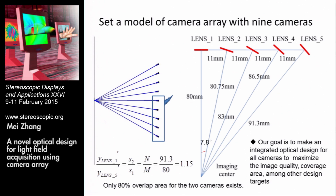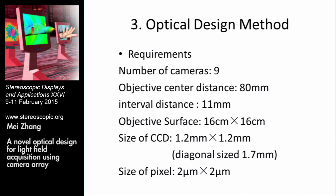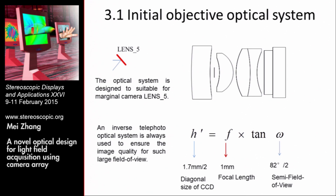Our goal is to make an integrated optical design for all cameras to maximize image quality and coverage area among other design targets. Here I list some design requirements, including the number of cameras, objective center distance, interval distance, size of the objective surface, size of the sensor, and pixel size. First, we design an optical system suitable for a marginal sensor. From the requirements, we calculate the field of view as 82 degrees, and from the formula, the focal length would be 1 millimeter.